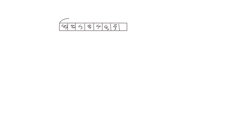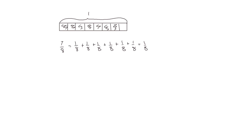Let's look at another one. Let's draw a tape diagram again. This time we're going to break it into eighths and we're going to shade seven of those eighths. We're going to show that the whole tape diagram is equal to 1, so the part we've shaded is 7 eighths. If we want to show this as the sum of unit fractions, it would be 1 eighth plus 1 eighth plus 1 eighth plus 1 eighth plus 1 eighth plus 1 eighth plus 1 eighth.